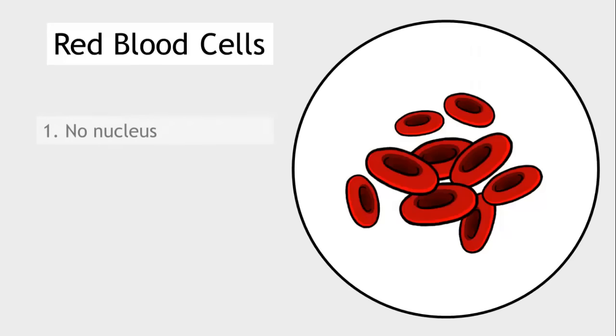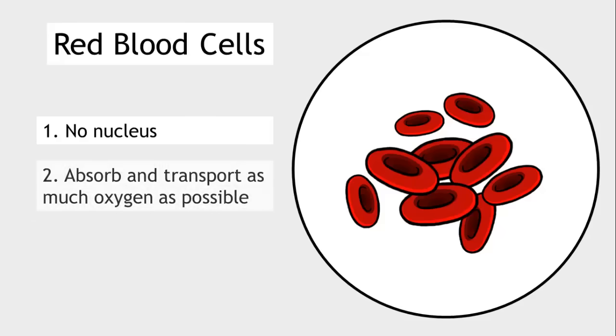Red blood cells do not possess a nucleus. This is so that they've got enough space to be able to absorb and transport as much oxygen as possible.